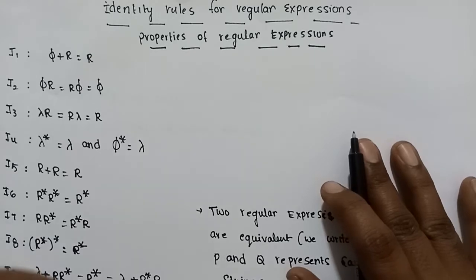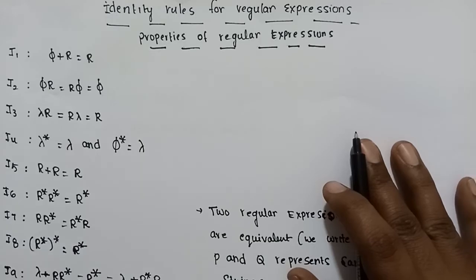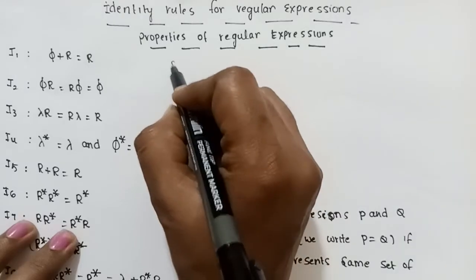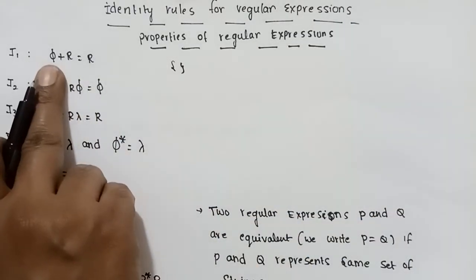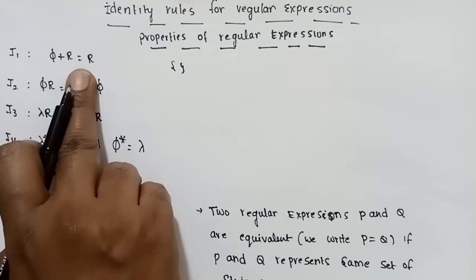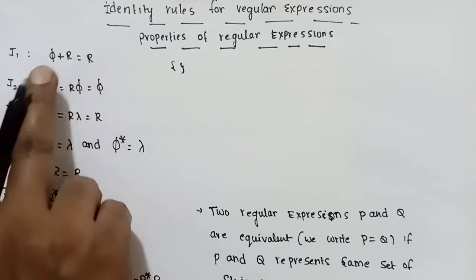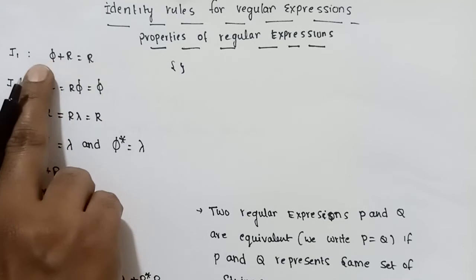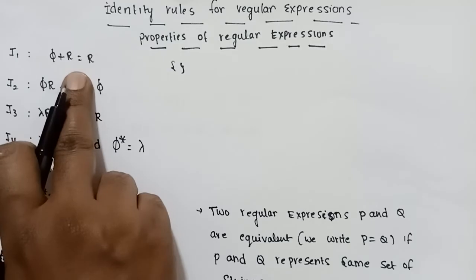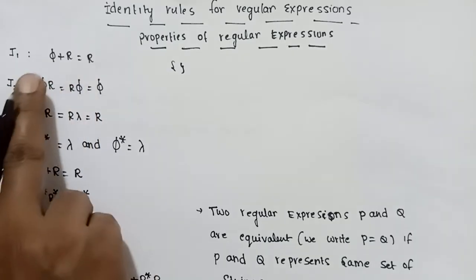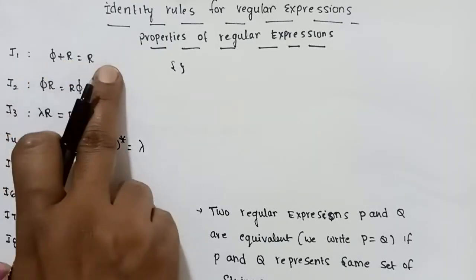Property 1: φ (null set) union with any regular expression R. φ is a regular expression which represents the null set. When φ is in a union with R, the resultant is R. So φ ∪ R = R.